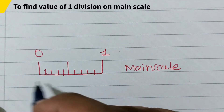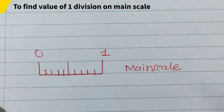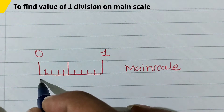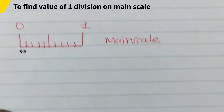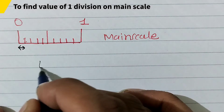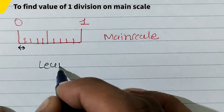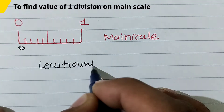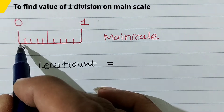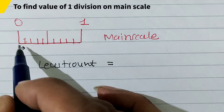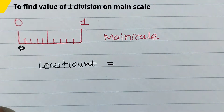What is the least count of the main scale? The least count tells us the smallest value we can measure from it. So we want to find the least count of the main scale. This length here is known as the least count of the main scale.